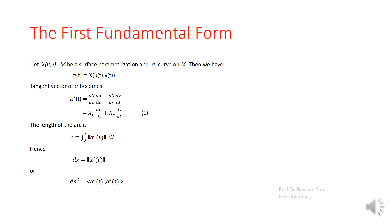Hello everyone, this is the class on differential geometry 2. Up to now we have considered the differential geometry of Euclidean space, and then we defined the surface — specifically surface parameterization. We defined the regular surface, and the difference between a regular surface and a parametric surface is that the parameterization is not enough to cover the whole surface. That is why we define the regular surface, and then we define the tangent plane of the surface.